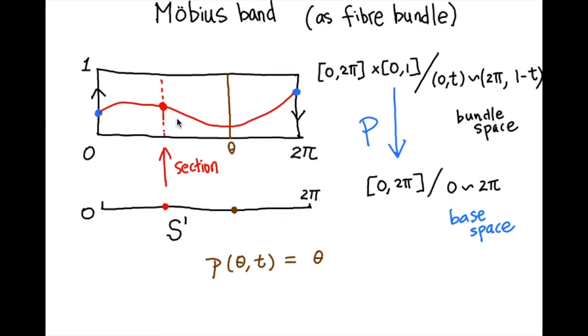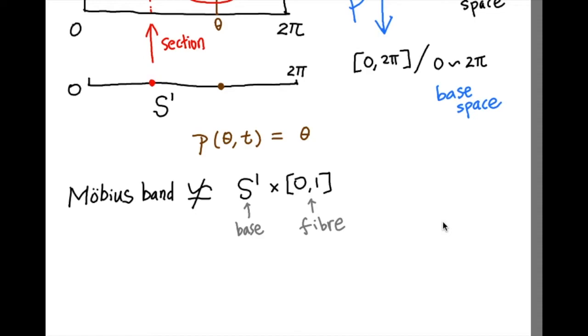So a section would look like this. Of course a section should be a continuous map, so 0 and 2π should be mapped to the same point. The reason we talk about a fiber bundle is because the Möbius band, obviously an interesting topological object, is not the product space of base S¹ and the interval [0, 1].